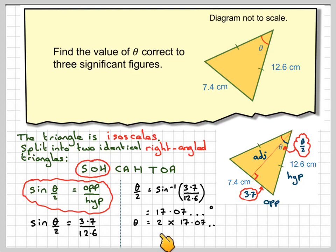So in order to find theta we need to do 2 times 17.07 which gives me 34.15 which gives me 34.2 degrees to three significant figures.